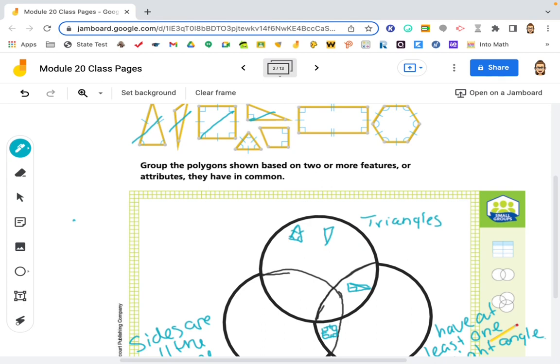Here we have a triangle that has all the sides that are the same. Here we have a shape that has at least one right angle, it's not a triangle, it does not have all the sides that are the same.